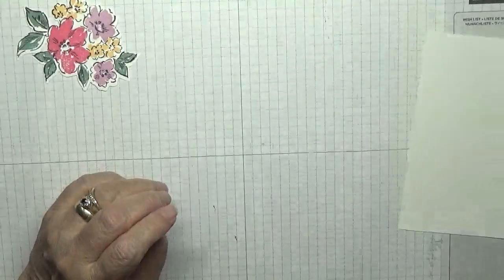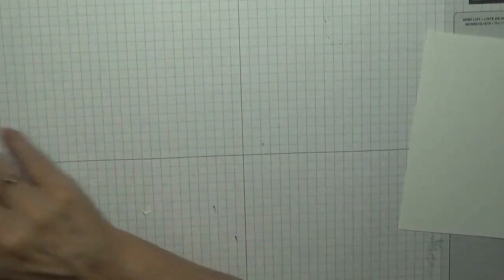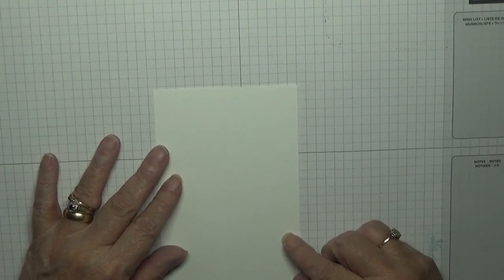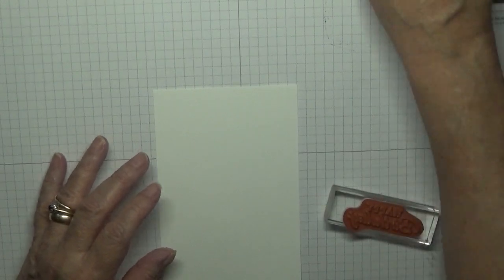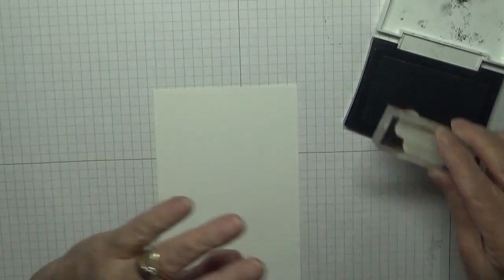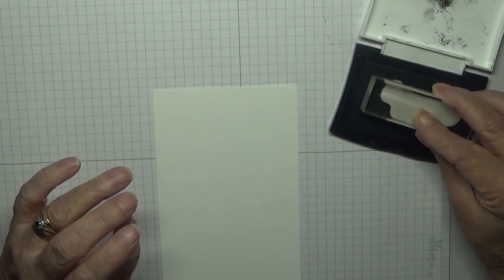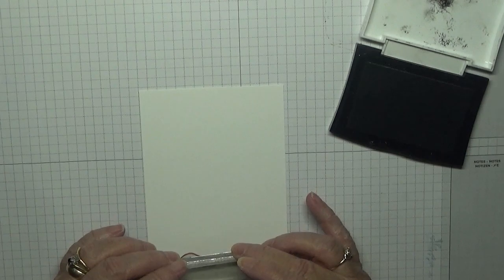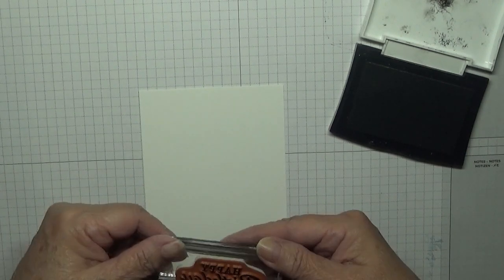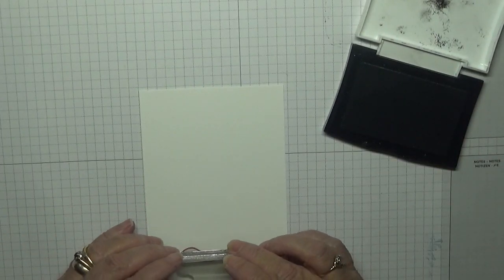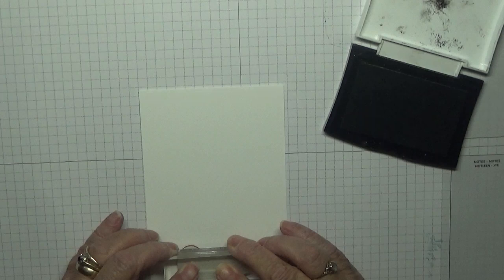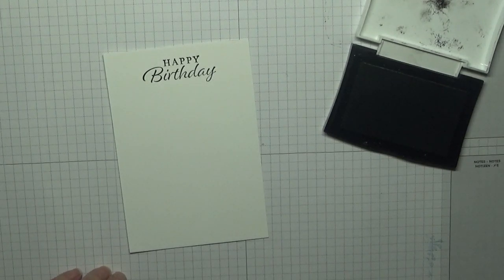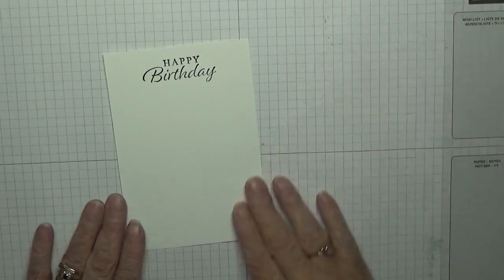I'm going to put this away. Now we need to stamp happy birthday on here. With my happy birthday and my Versafine, I'm actually going to stamp this upside down. I'm going to stamp it right here. Now I've got to make sure it is dead straight. Not as bold as the other one was.